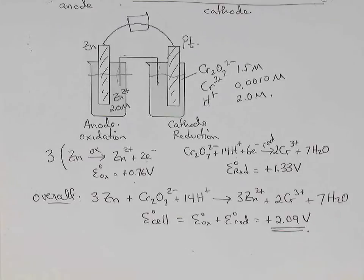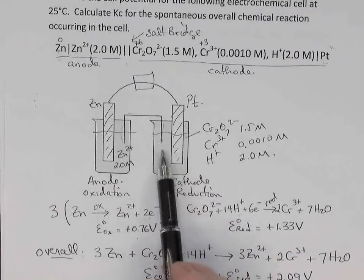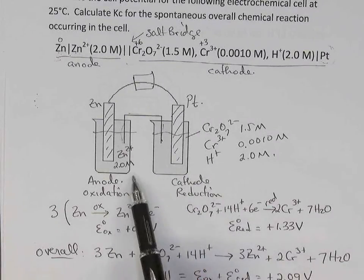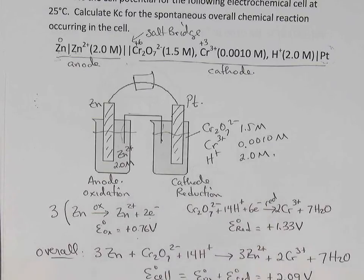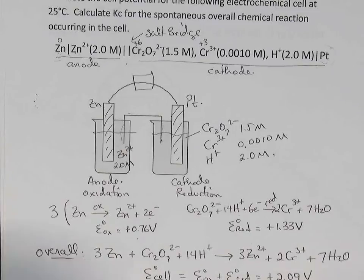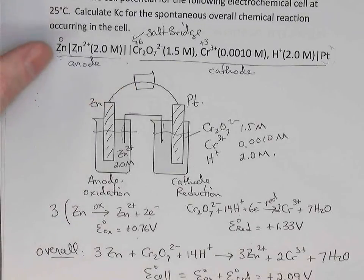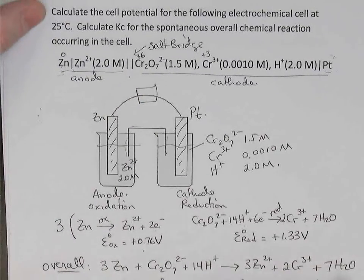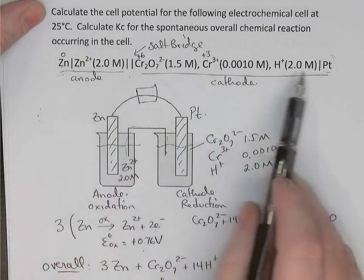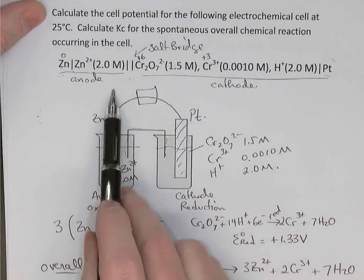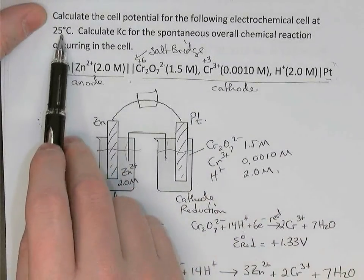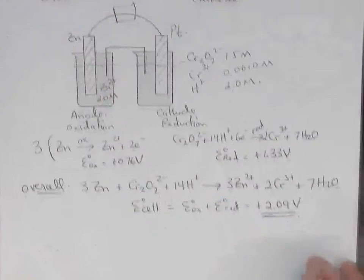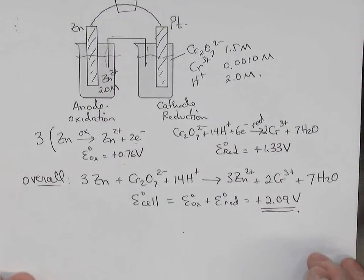So that would be the standard potential if, back here, all of our ion concentrations were one molar and the temperature was 25 degrees Celsius. That would be the potential that our voltmeter would read. This is a non-standard cell because the concentrations of the ions are not one molar, although our temperature is 25 degrees Celsius. So we want to calculate E-cell.